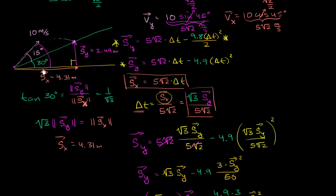We now know the total displacement in both the vertical and horizontal directions. If you wanted to figure out exactly how far along the hill we traveled, you can use both these values in the Pythagorean theorem to find the hypotenuse of this right triangle.